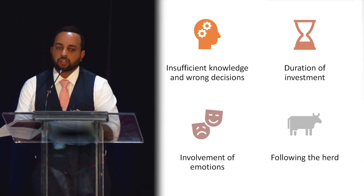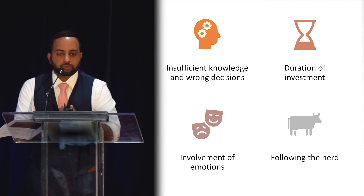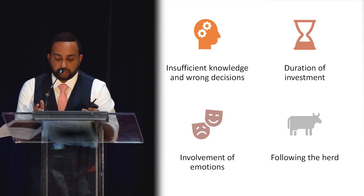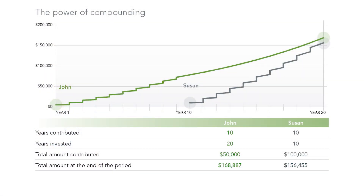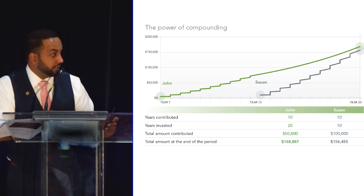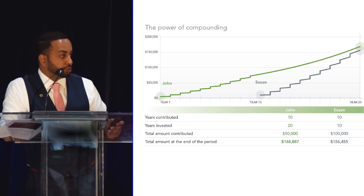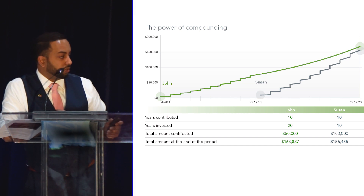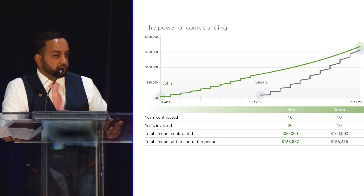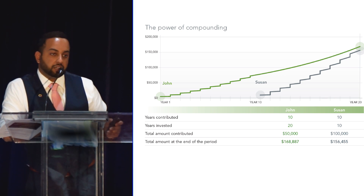Fidelity Investments has some really good slides I keep with me — I print and laminate them. This is one of my favourite slides about the power of compounding. It's easy for people to put off investing, with the common perception that if you don't have enough money now, it's better to contribute more later. The slide shows John and Susan, both contributing over a 10-year span. John has been in the market 20 years since he started earlier; Susan only 10 years. John put in $50,000 total; Susan put in double trying to catch up. In the end, John has more money.